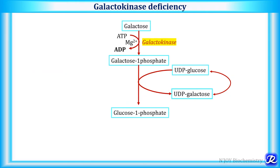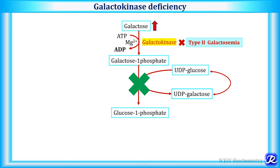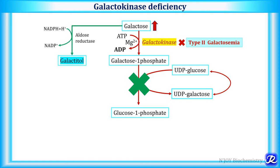In type 2 galactosemia due to galactokinase deficiency, galactose cannot be converted into galactose 1-phosphate, so further reactions cannot occur — there is no formation of UDP galactose or glucose 1-phosphate, and galactose accumulates. This results in galactosemia and galactosuria. The increased galactose is channeled toward galactitol formation by aldose reductase, which is present in organs like liver, kidney, lens, retina, and seminal vesicles.